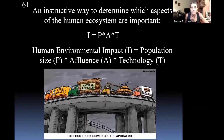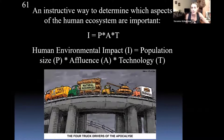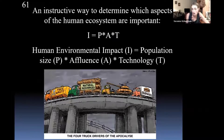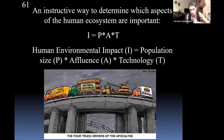This is called the IPAT equation. It's an instructive way to conceptualize which aspects are having the most impact on the environment. The I is human impact on the environment — overall impact. It's a result of several factors, not just population. P for population — that's part of it. But that's not the only thing that matters, and it may not be the most significant thing. There's also affluence — a fancy word for wealth or consumption — and certain people in the world consume far more than their fair share.